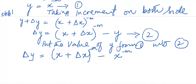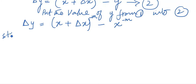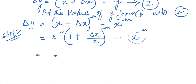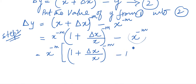Now step 2 begins. We need to solve this step 2. In this step, we take x raised to power minus m common from both terms. After taking common, we are left with 1 plus (delta x over x) raised to power minus m, and the common term gives us minus 1. This is why I took x raised to power minus m common — because the value of y was also x raised to power minus m.